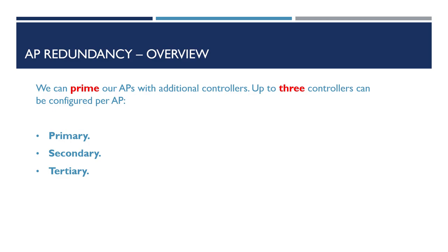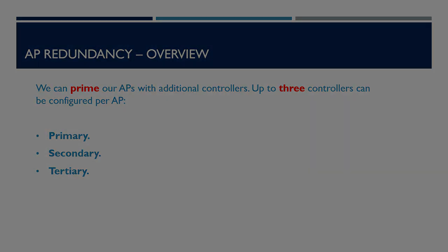These are known as primary, secondary, and tertiary. This controller configuration is then saved in non-volatile memory so that they're saved and remembered after a reboot or power failure.